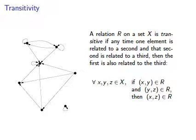A transitive relation has a property that any place you can get to in two hops, you can get to in one hop. Formally, if we have x, y, and z as elements of some set big X, and if x is related to y, and y is related to z in some relation R, then x must be related to z in that relation.